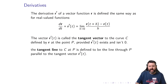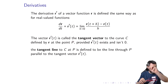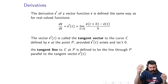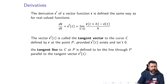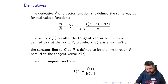We call r'(t) the tangent vector to the curve traced out by r(t). If we have a curve C given by r, then r'(t) is the tangent vector to the curve at a point P — provided that r'(t) exists and isn't zero. The tangent line to C at point P is defined to be the line through P parallel to the tangent vector r'. We'll sometimes also be interested in the unit tangent vector, which is r'(t) divided by its length.